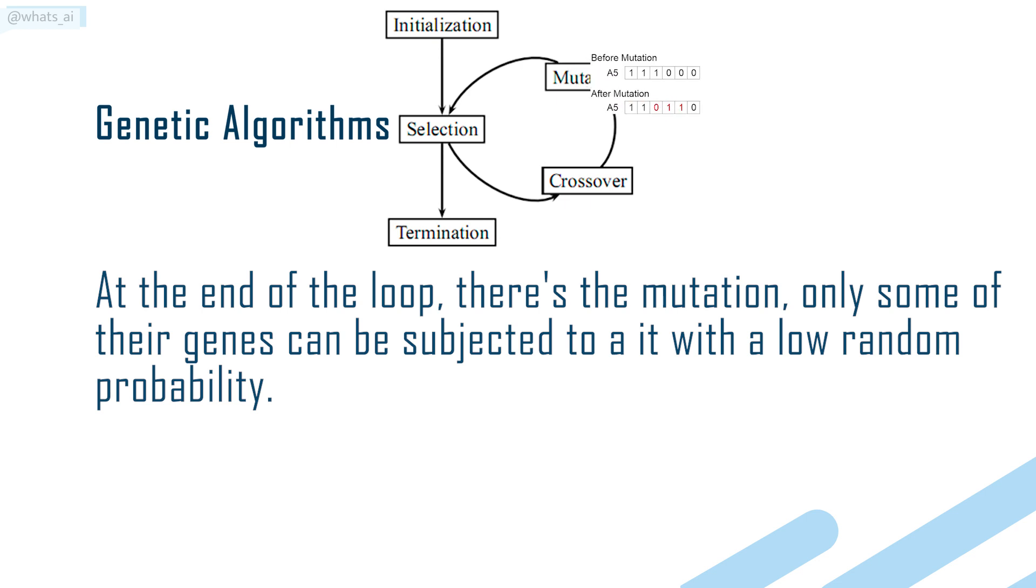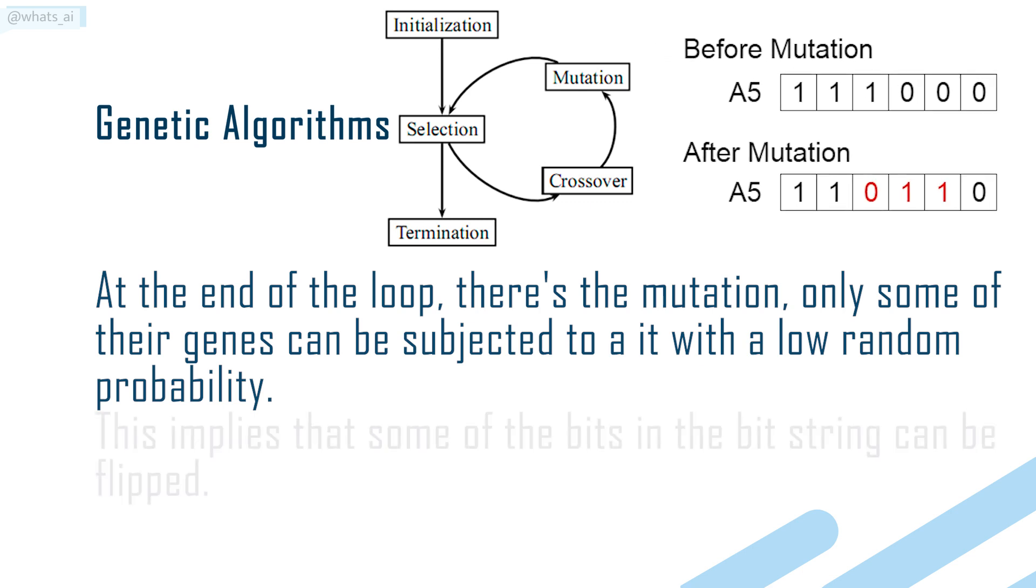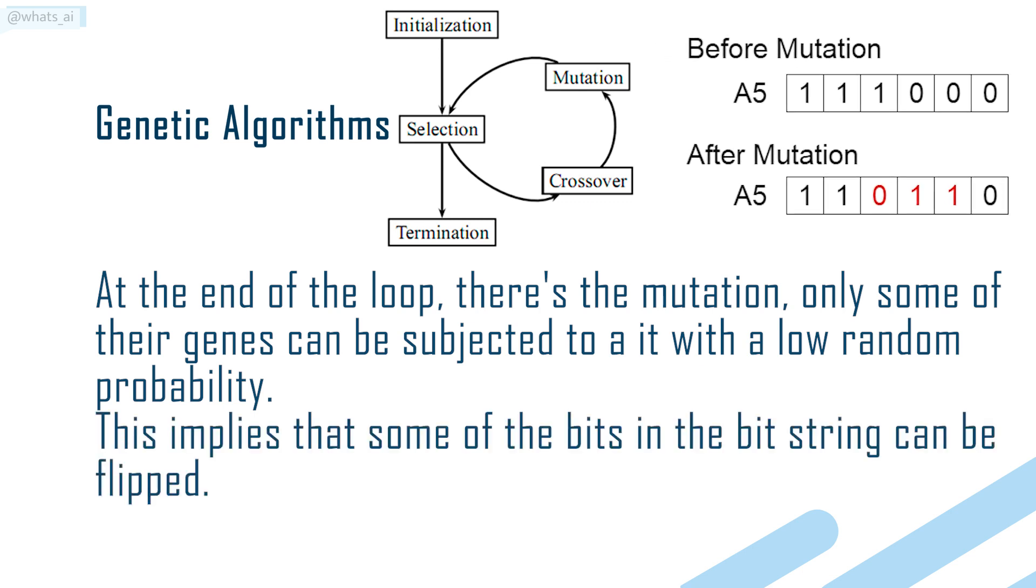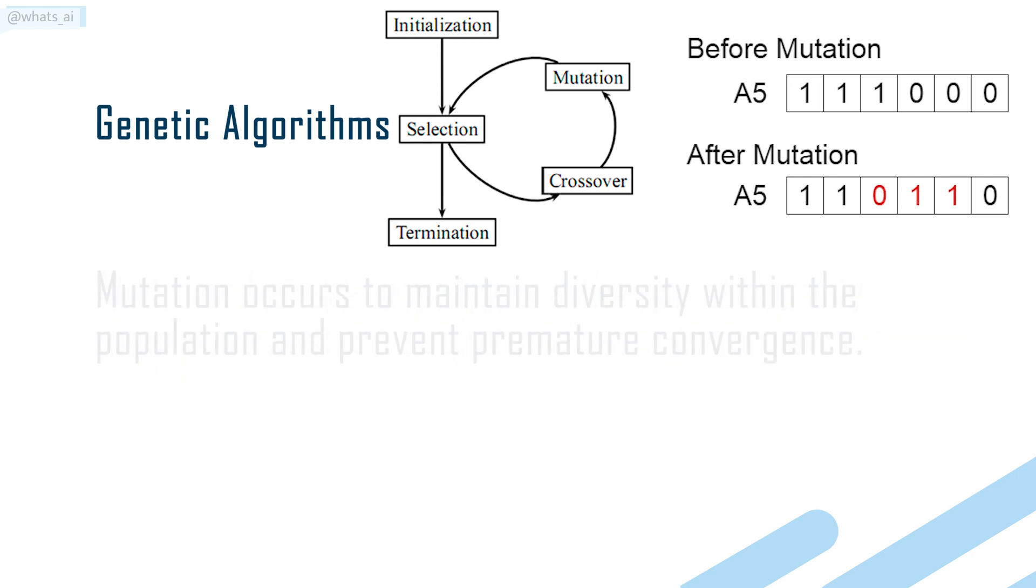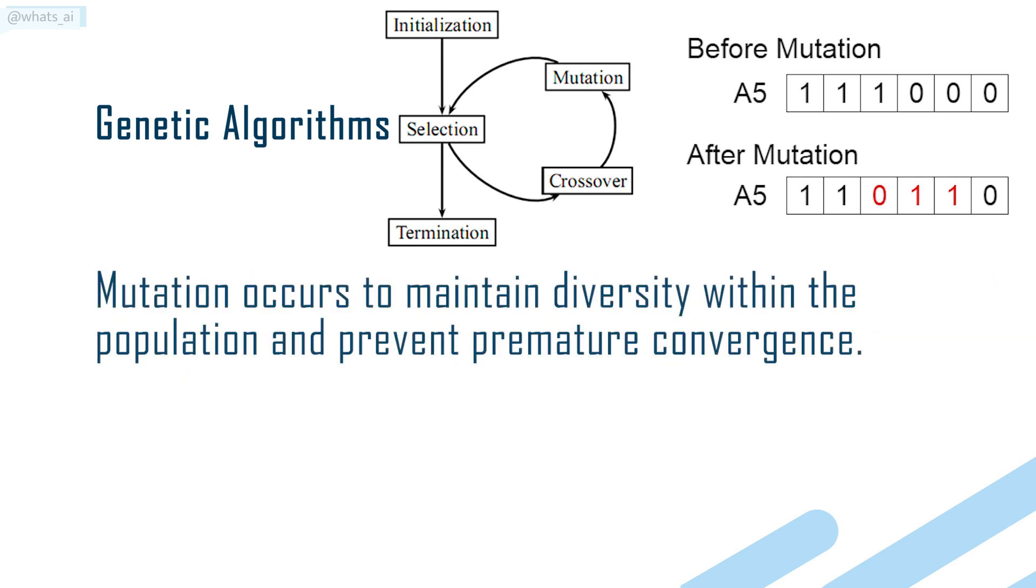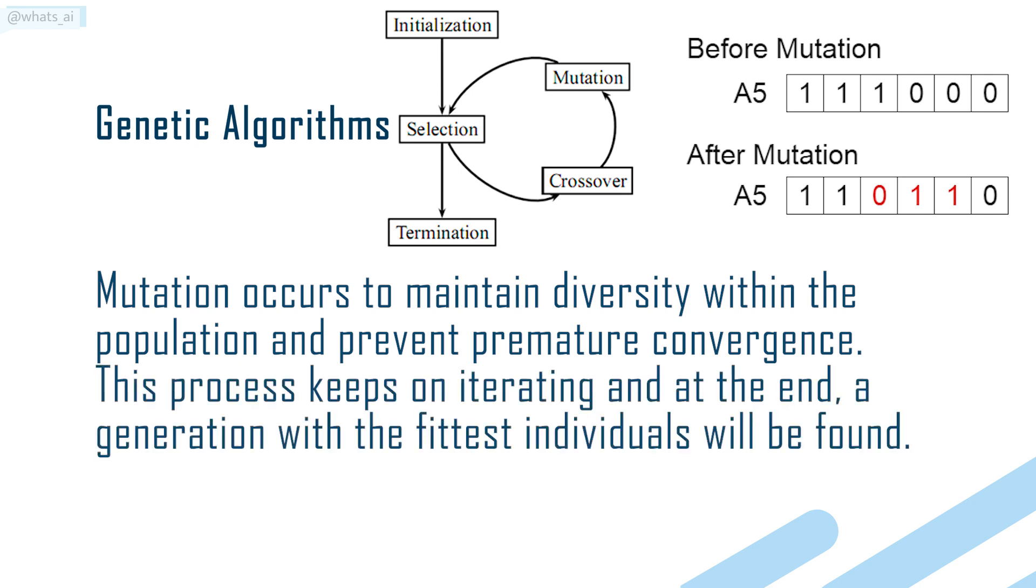At the end of the loop, there's the mutation. Only some of their genes can be subjected to it with a low random probability. This implies that some of the bits in the bit string can be flipped. Mutation occurs to maintain diversity within the population and prevent premature convergence.